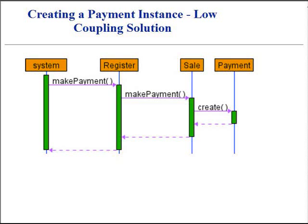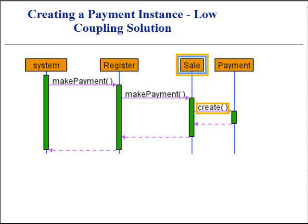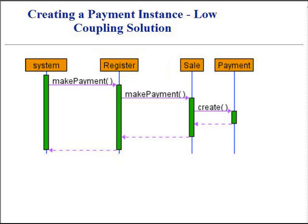An alternative solution to creating the payment and associating it with the sale could be done as follows. This is an example of a low coupling solution. Under the alternative scenario, the sale makes the creation of a payment object. The register no longer has knowledge of payment. Low coupling becomes a useful principle to keep in mind during many design decisions, as it supports the design of classes that are more independent, which reduces the impact of future changes. This solution becomes one of several design principles that influence a choice in assigning responsibility between classes.